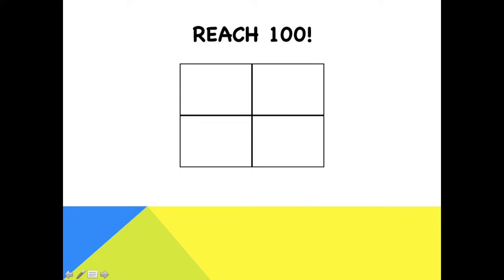This puzzle is called Reach 100. You can see I've got a box that's made up of four separate boxes, and in each of the four boxes I'm going to put a single digit, and each digit is going to be different.